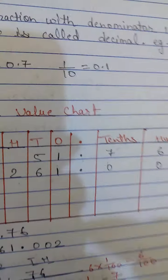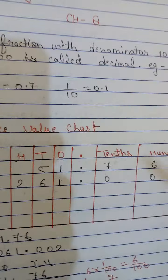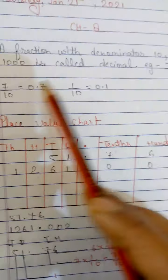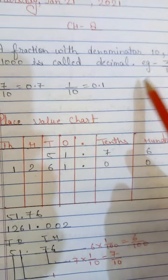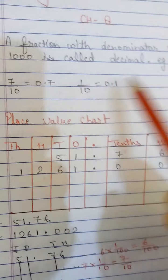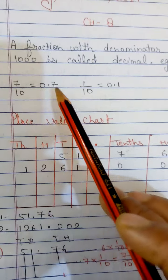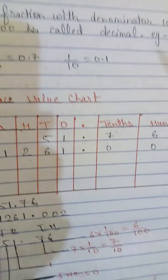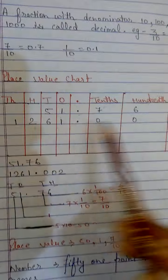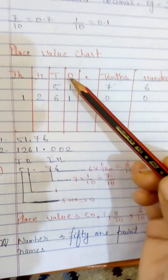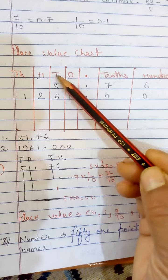Now let's see today's work. A fraction with denominator ten, hundred, or thousand is called a decimal. For example: 3/10 = 0.3, 7/10 = 0.7, 1/10 = 0.1. Now look at the place value chart carefully — you need to pay attention to this chart.